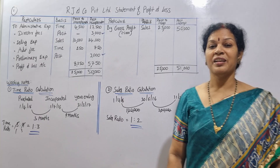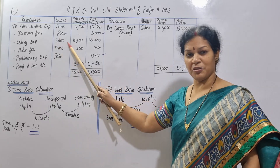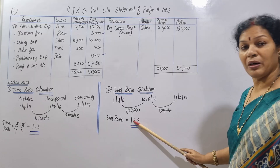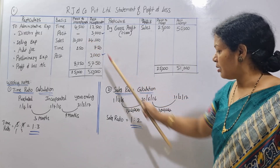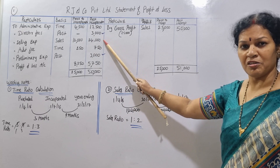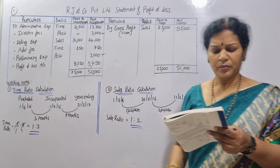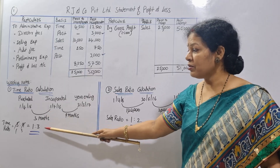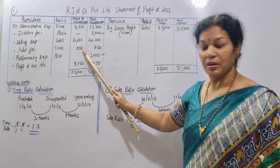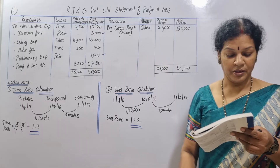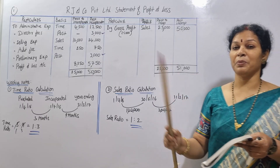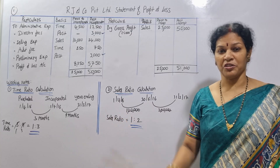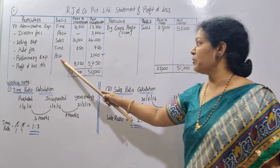Selling expenses of 36,000 are on sales basis (1:2): 36,000 × 1/3 = 12,000 for pre; 36,000 × 2/3 = 24,000 for post. Audit fee of 1,000 is on time basis (1:3): 1,000 × 1/4 = 250 for pre; 1,000 × 3/4 = 750 for post. Preliminary expenses of 3,000 are company-related and posted directly to post-incorporation.